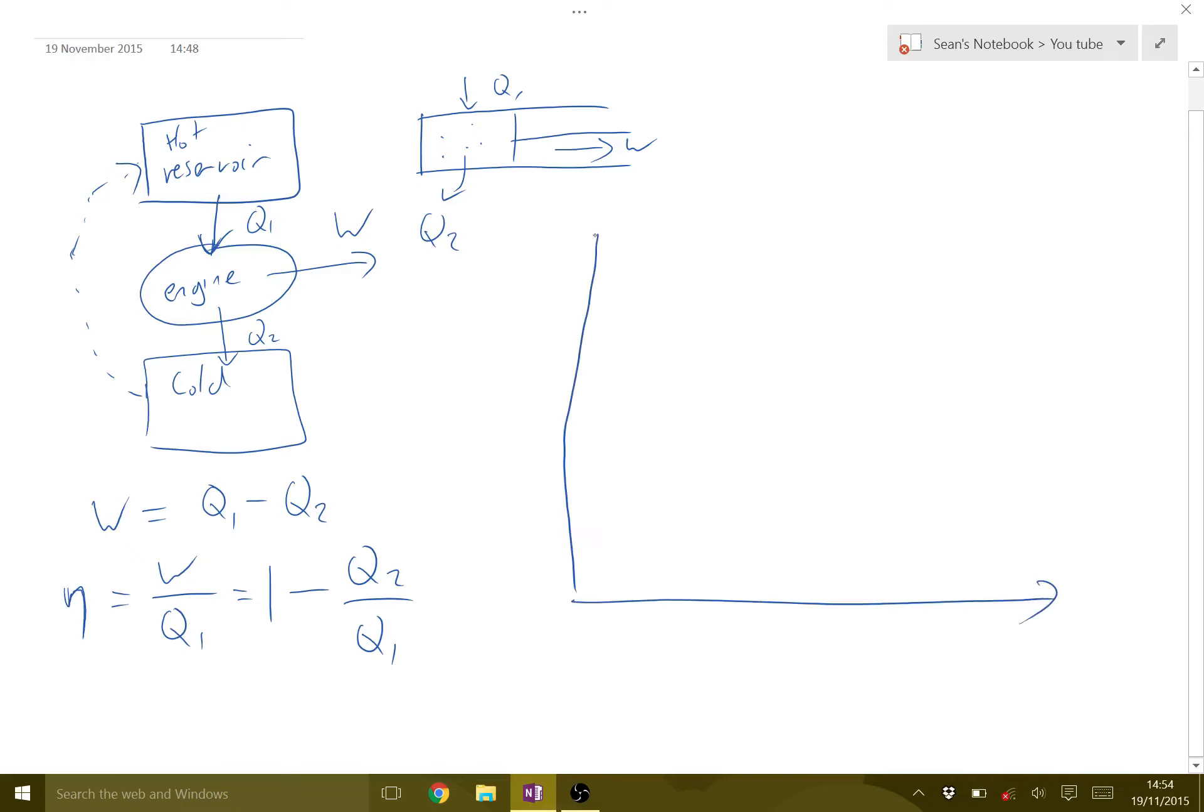So I'm going to be drawing a specific type of heat engine, which is called the Carnot cycle. Now the Carnot cycle is a theoretical thing. It's the most efficient heat engine we could possibly hope to get. It's all based on theory. It's not something we can actually make.